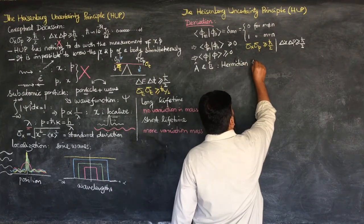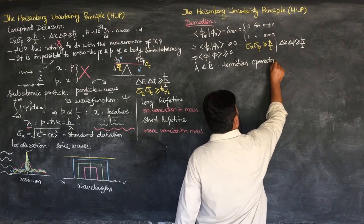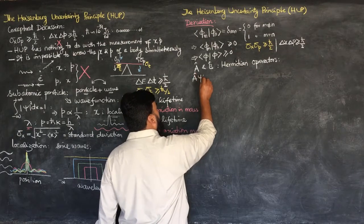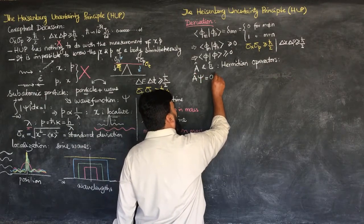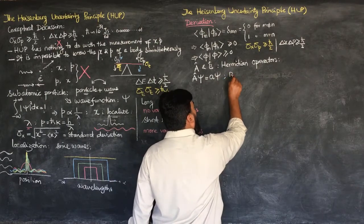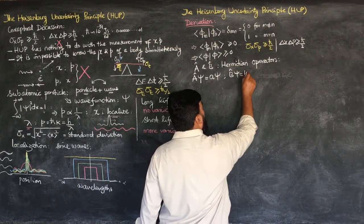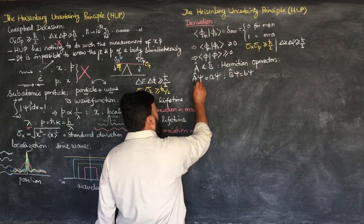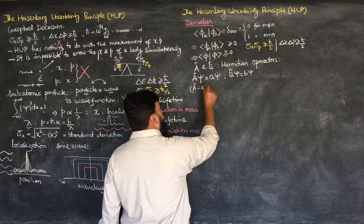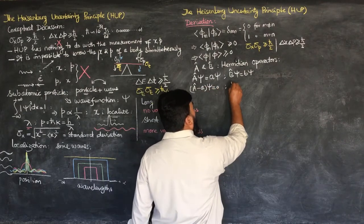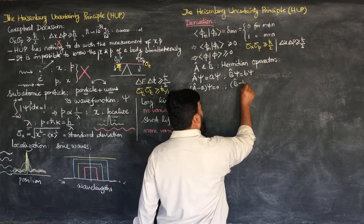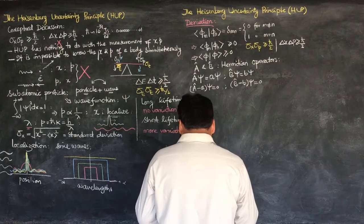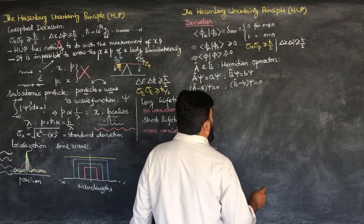These are Hermitian operators such that when they operate on a wave function: A operating on ψ gives eigenvalue ⟨A⟩ψ, and similarly B operating on ψ gives ⟨B⟩ψ. We can rewrite these as the eigenvalue equations: (A − ⟨A⟩)ψ = 0 and (B − ⟨B⟩)ψ = 0.